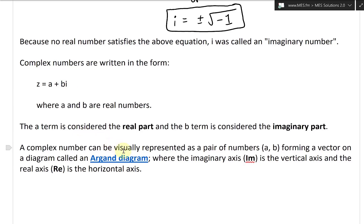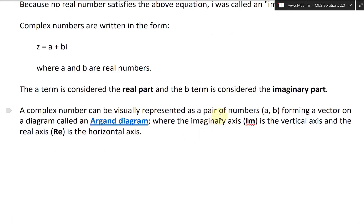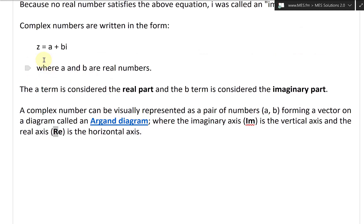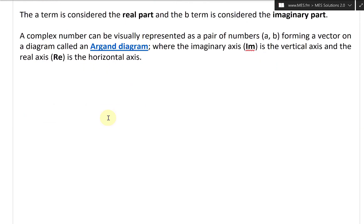A complex number can be visually represented as a pair of numbers (a, b) forming a vector on a diagram called an Argand diagram, where the imaginary axis (Im) is the vertical axis and the real axis (Re) is the horizontal. In other words, basically a complex number is just a two-part number instead of just one.